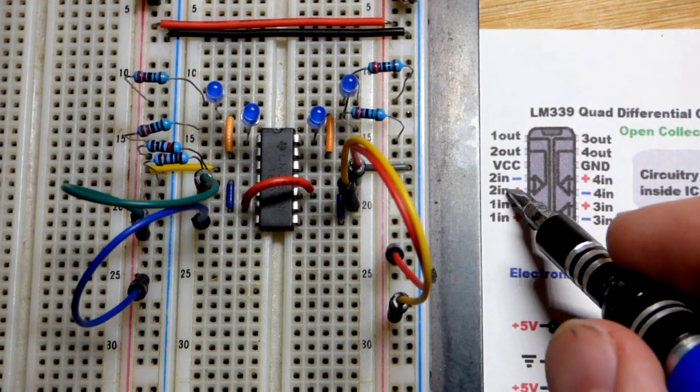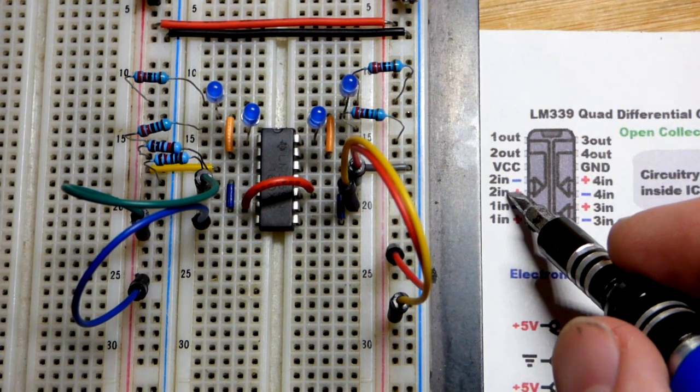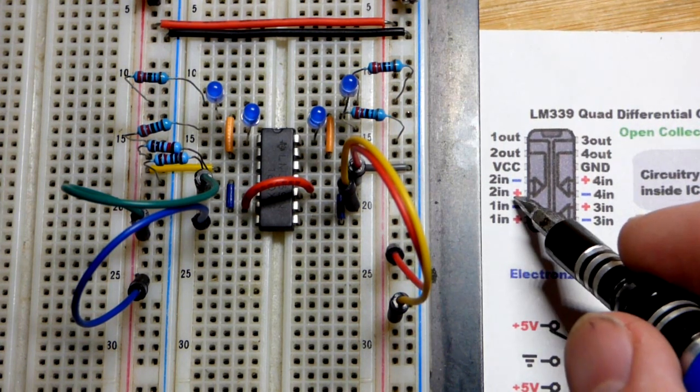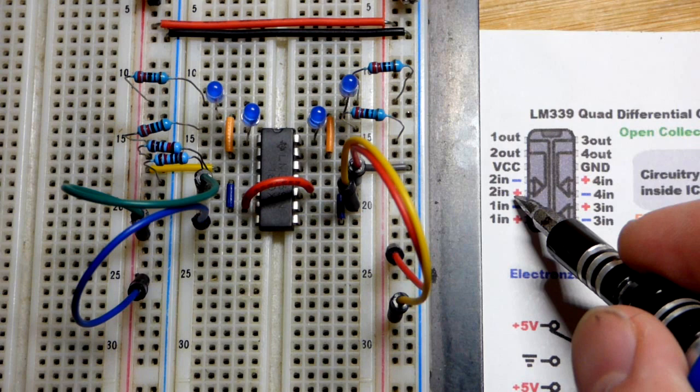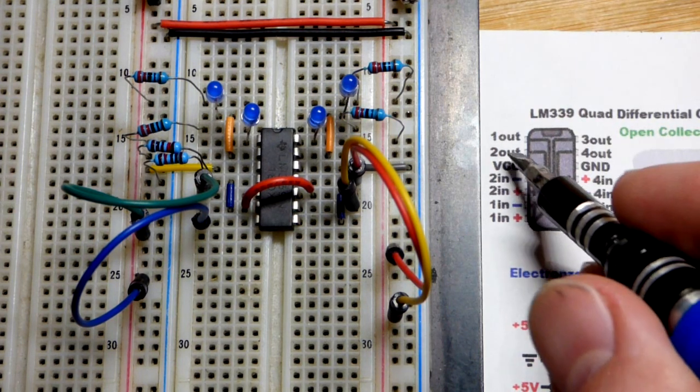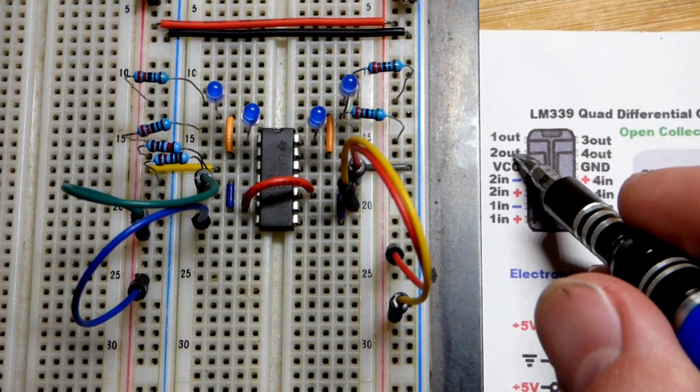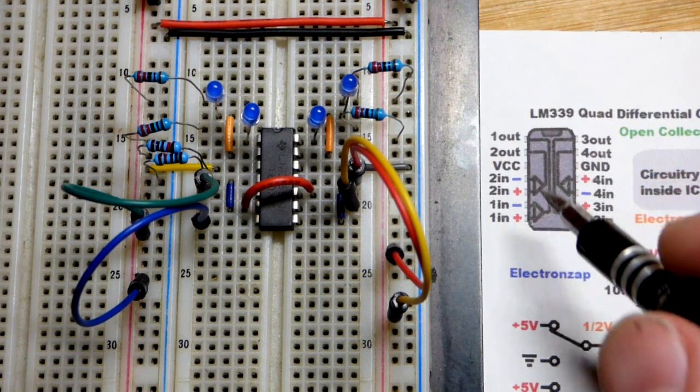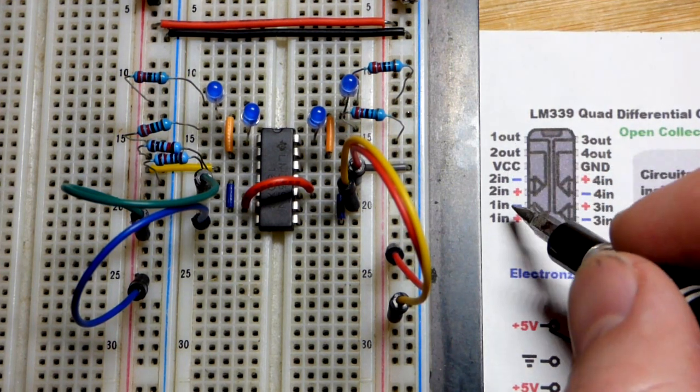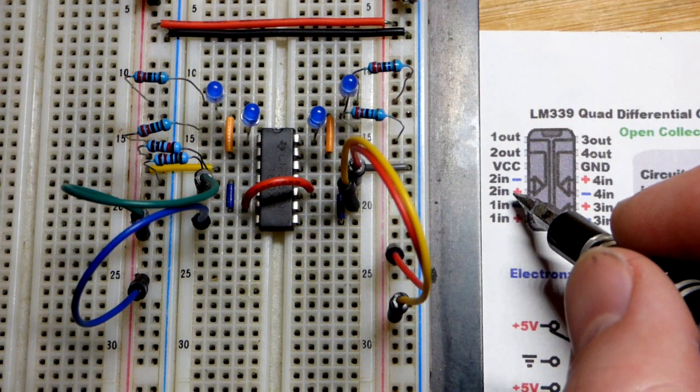All it does is it looks at which input has a higher voltage than the other one. When the plus input, the non-inverting input, is higher, then the output is high. Which is actually just off in this integrated circuit because it's an open collector output. We'll talk about that later on.